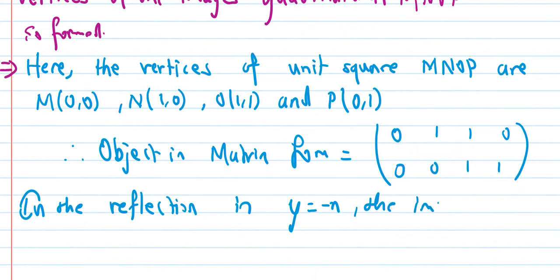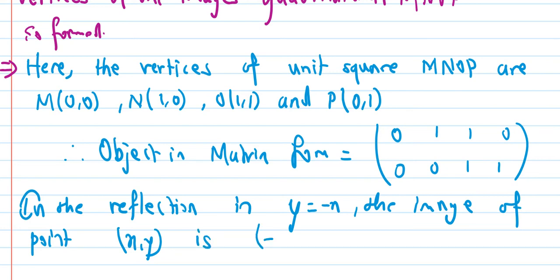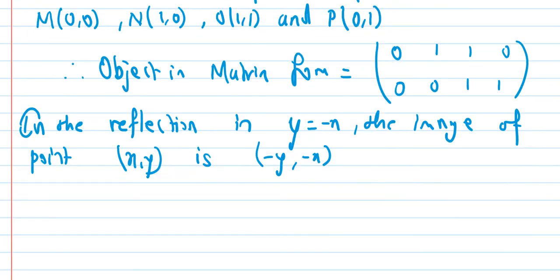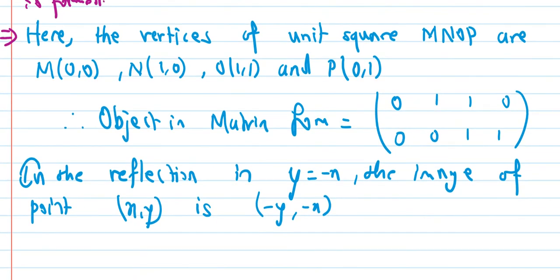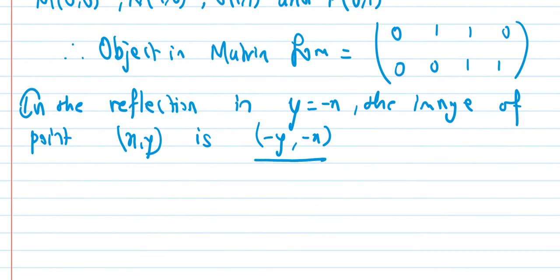In the reflection in y equals to minus x, the image of point x comma y is minus y comma minus x. So if we have x comma y, its reflection in y equals to minus x gives us minus y comma minus x.